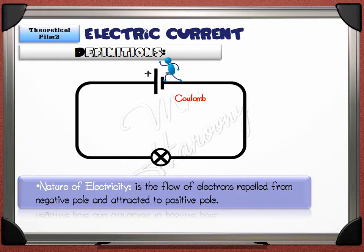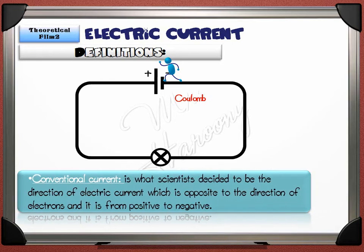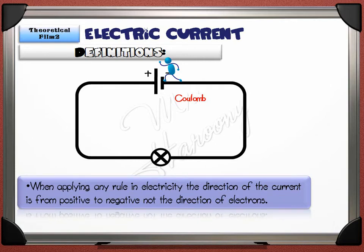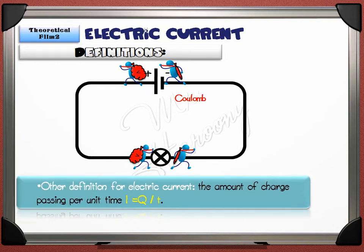Scientists chose to introduce what they named the electric conventional current, which is opposite to the direction of the electrons. Conventional current is what scientists decided to be the direction of electric current, which is from positive to negative. At this beginning level, we just need to know that the current direction is taken from positive to negative in all cases. When applying any rule in electricity, the direction of the current is from positive to negative, not the direction of electrons. Another definition for electric current is the amount of charge passing per unit time: I equals Q over T.